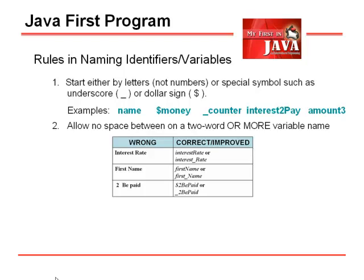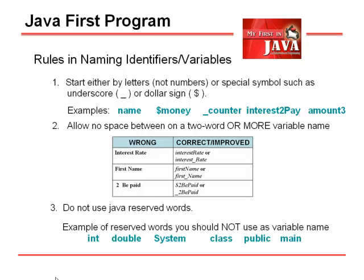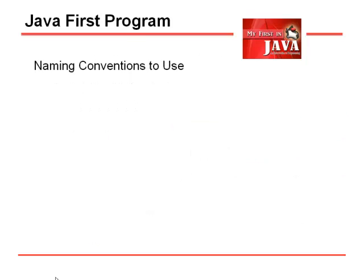You cannot start with a number. You could start with a dollar sign or an underscore — for example, $toBePaid or _toBePaid. We do not use Java reserved words. Examples of reserved words you should not use are: int, double, System, class, public, main. Using these as variable names will create a compiler error.